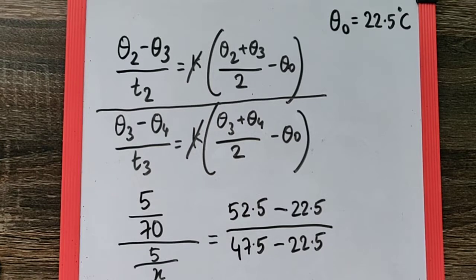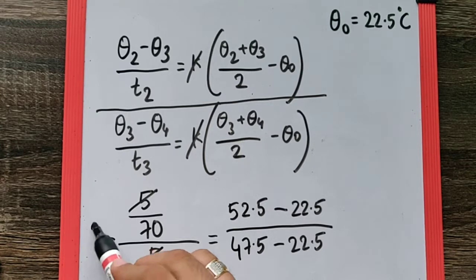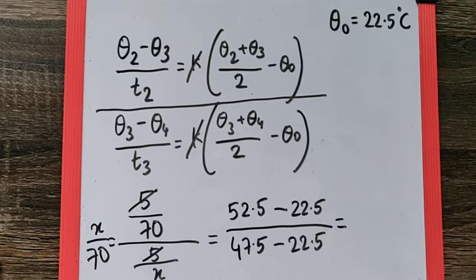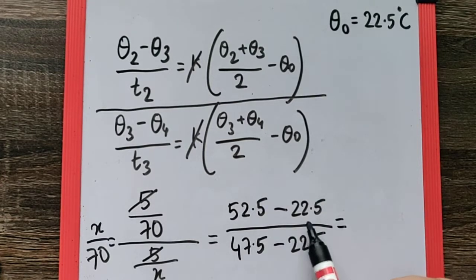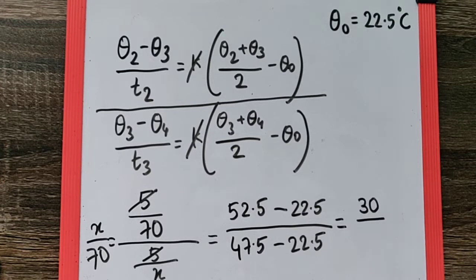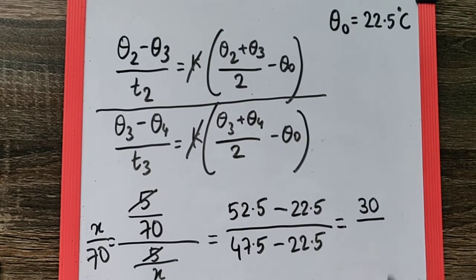If we try to calculate this, obviously we can cancel out this 5, this x goes up, so we get the equation as x by 70. And if we calculate this, 52.5 minus 22.5 is going to be 30, upon 47.5 minus 22.5 should be 25. So we can reduce this down to 6 by 5.